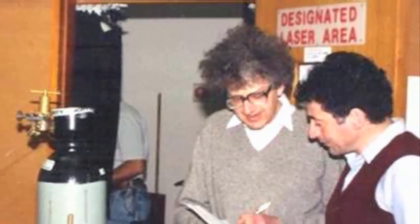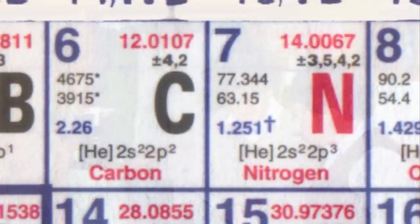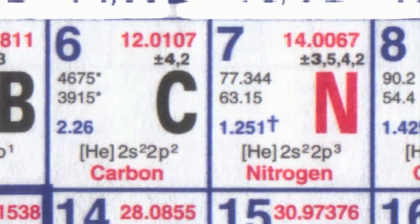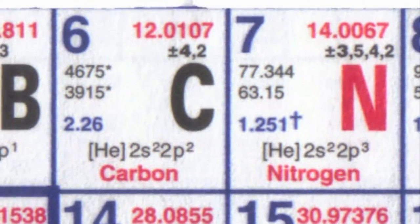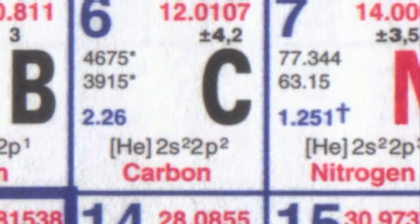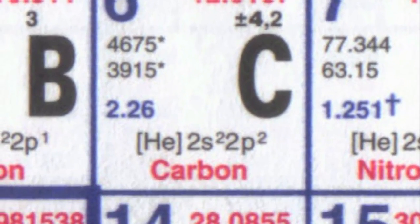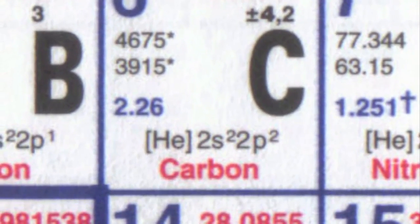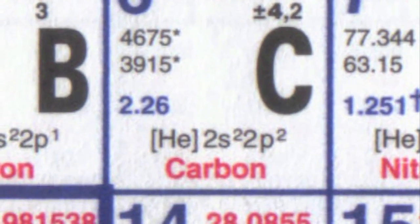So let's begin with the carbon dating. Radiocarbon dating is based on a radioactive form of carbon called carbon-14, which is being made in the atmosphere all the time out of nitrogen.